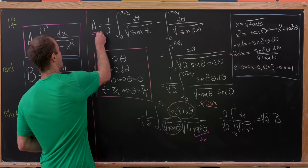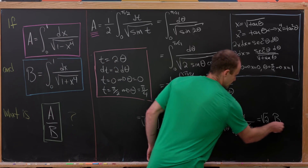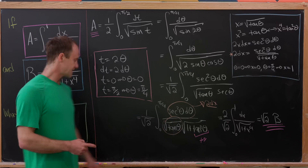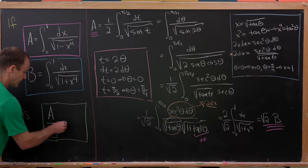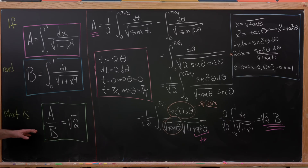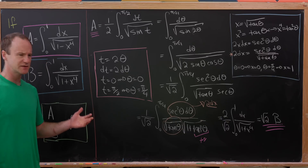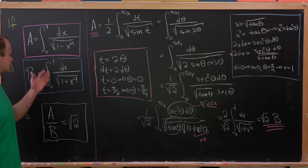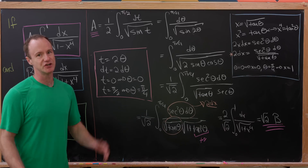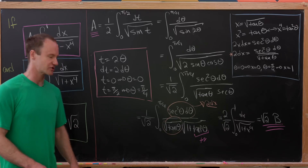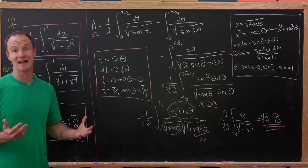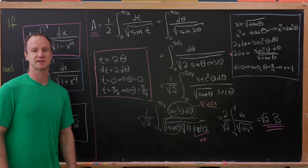So we have A equals the square root of 2 times B, which means A over B equals the square root of 2. In a sense, we've shown that the square root of 2 is a ratio of two things — not a ratio of two integers, so it's not rational, but it is the ratio of these two nice integrals. And that's a good place to stop.